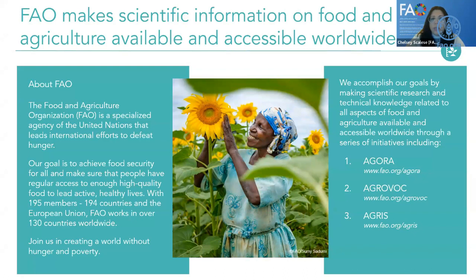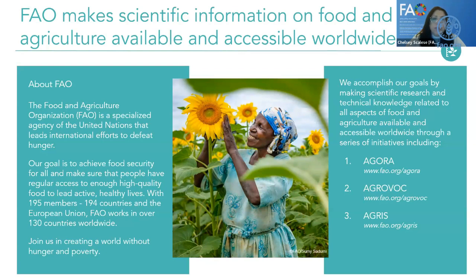These three initiatives help us promote the accessibility of scientific information and data in food and agriculture. They also help strengthen the engagement of international, regional, and national organizations in increasing access to agricultural data, and improve the quality and effectiveness of agriculture research and education. This exchange of knowledge, information, and data not only supports FAO's work for a world free of hunger and poverty, but also contributes to the achievement of the sustainable development goals.